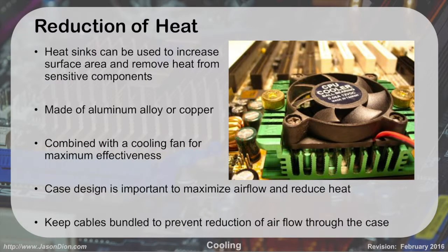So how do we reduce the heat? The first way is we use heat sinks. They increase the surface area of the processor and remove heat away from those surface components. The green metal portion with radiator fins is a heat sink, and sitting on top of it we have a fan to draw the heat up and away from the processor. These are usually made out of aluminum alloy or copper because they have good heat transfer capabilities, and they can be combined with a cooling fan for much more effectiveness.